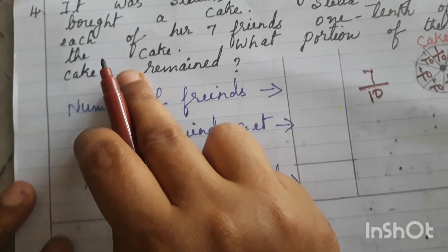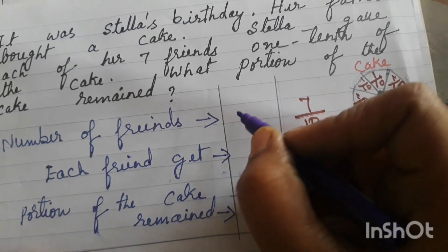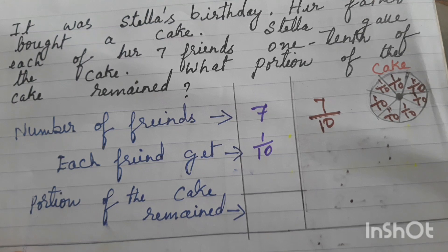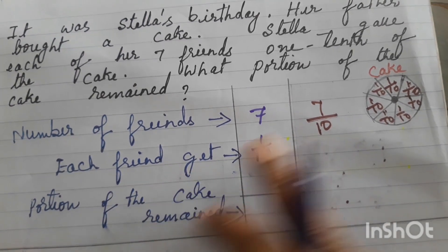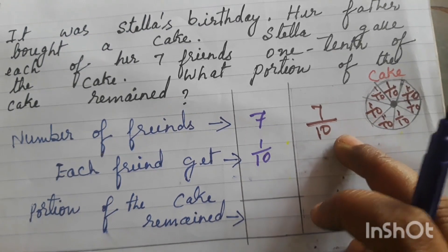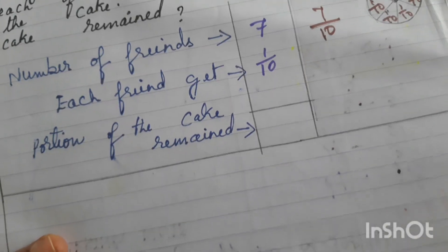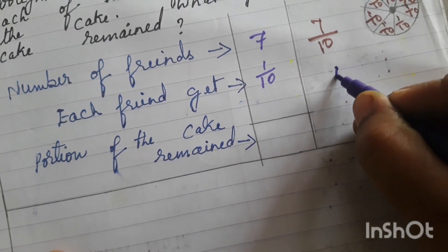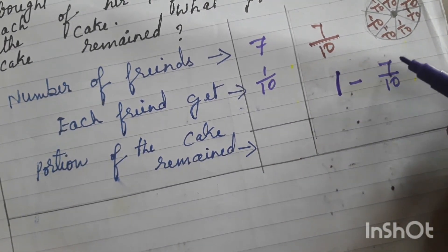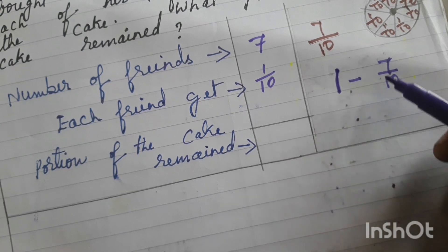Number of friends are seven. Each friend gets one by ten portion. Total portion distributed to friends is seven by ten. Now, the portion of cake remaining — that is what we have to find.